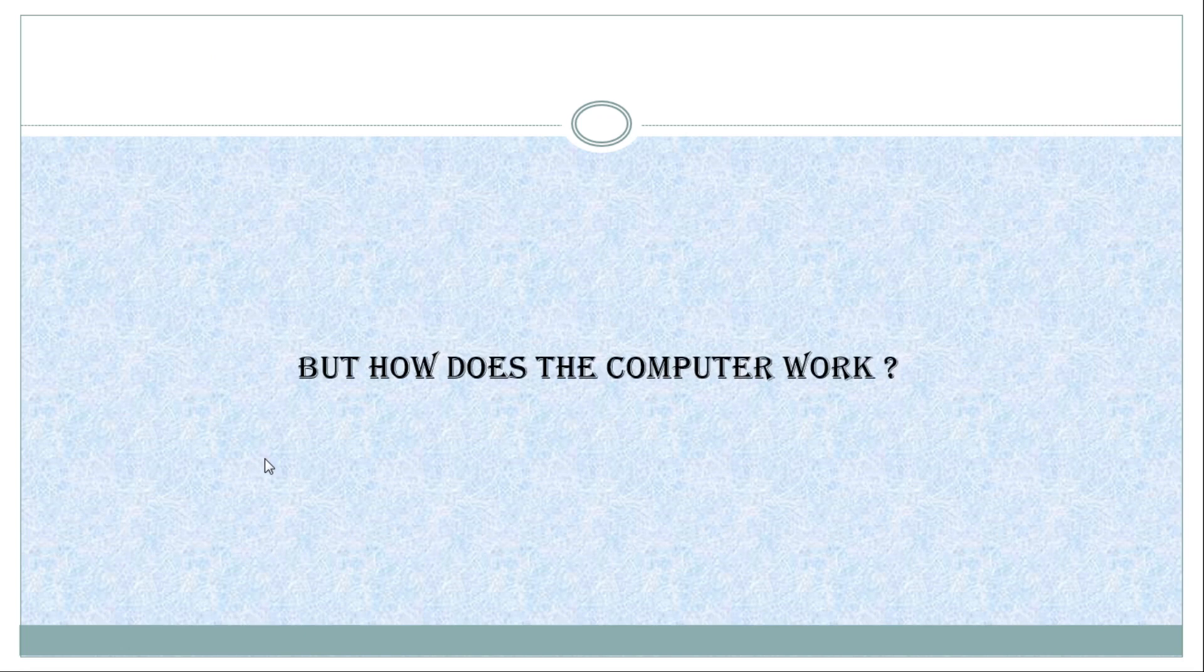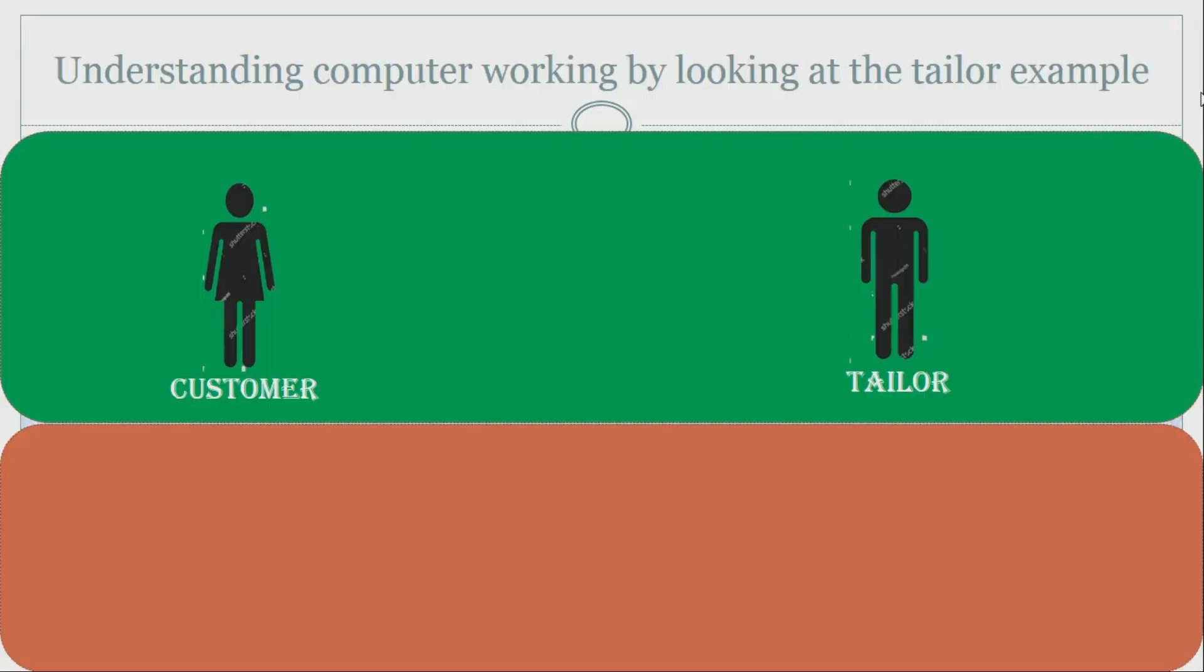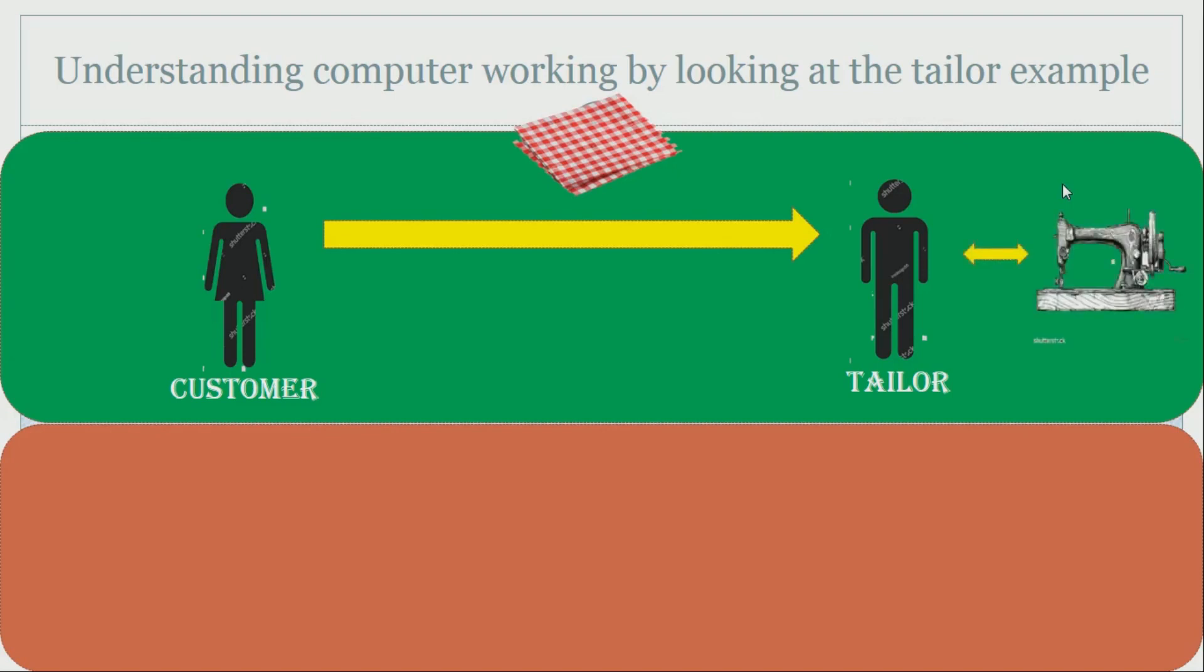Let's understand the computer working by looking at the customer tailor example. The customer wants to stitch her clothes so the cloth is in raw form. She provides them to the tailor. The tailor takes the unstitched cloth and processes it using his sewing machine. He stitches the cloth and finally converts the raw cloth into a stitched shirt. Once done, tailor provides it back to the customer after processing it, and now it is a stitched shirt.